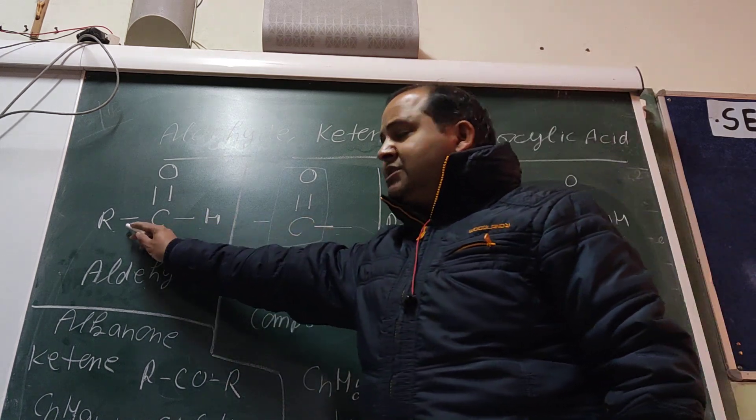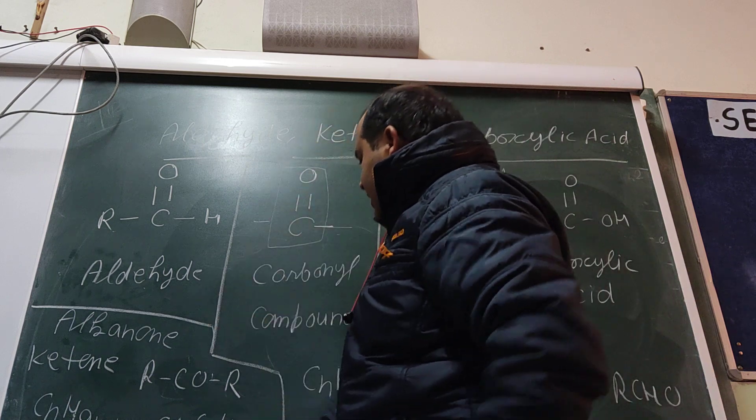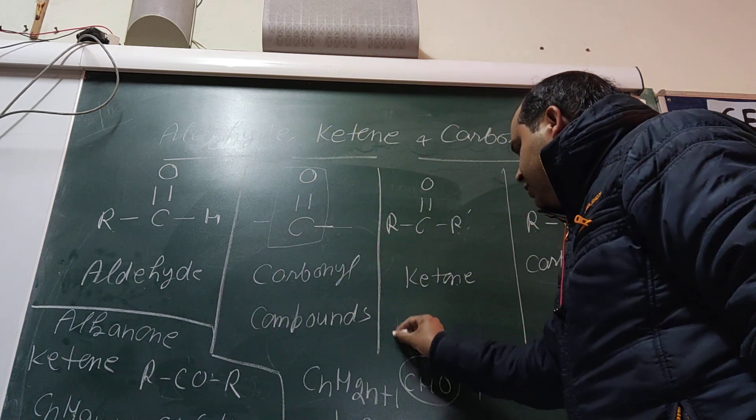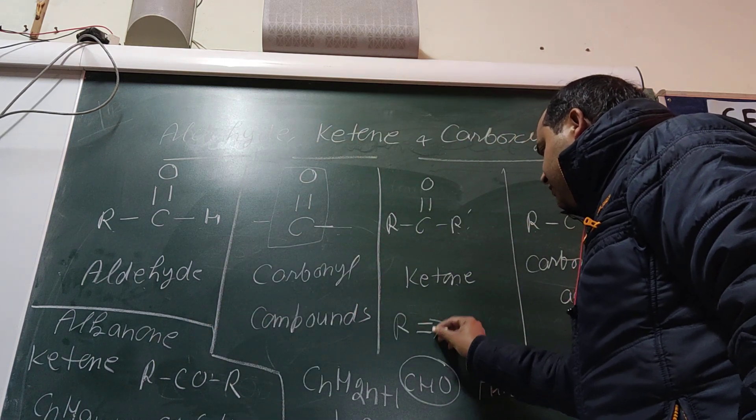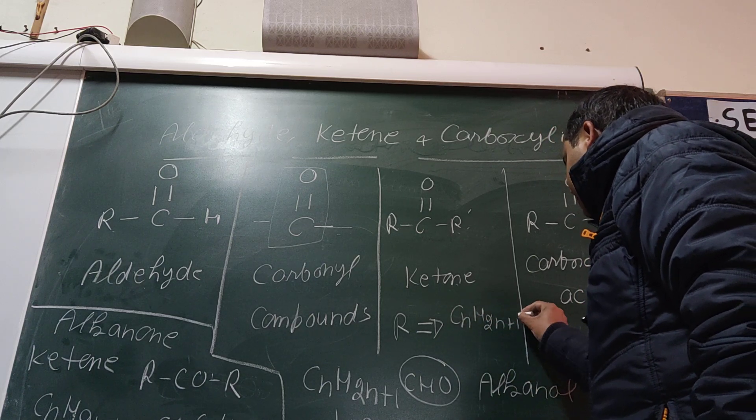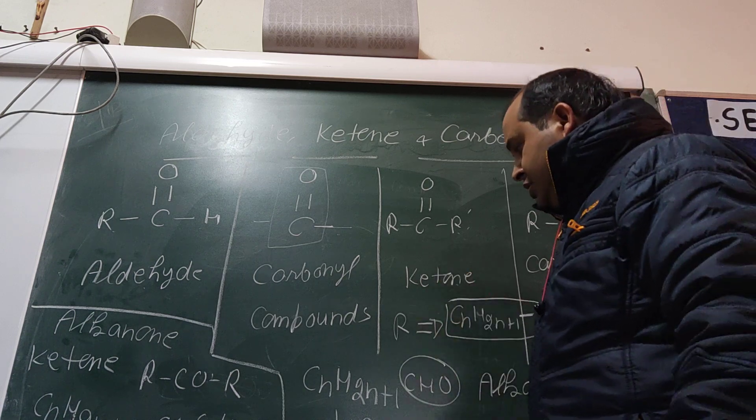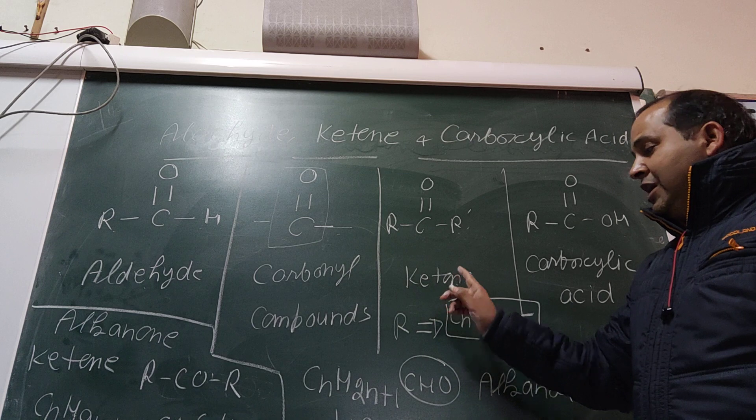What is R? This R is called an alkyl group. The meaning of R is CnH2n+1. This is called an alkyl group. So in the case of aldehydes,